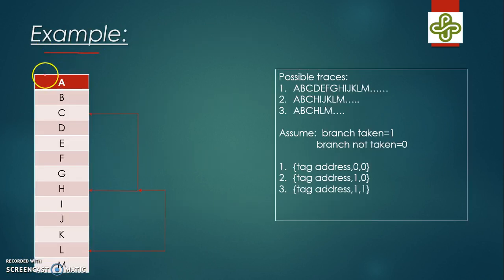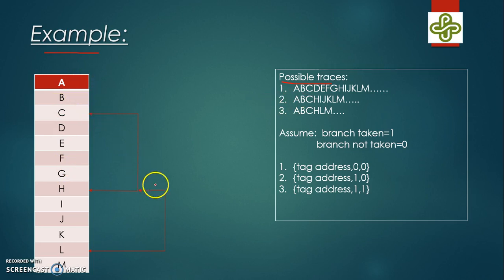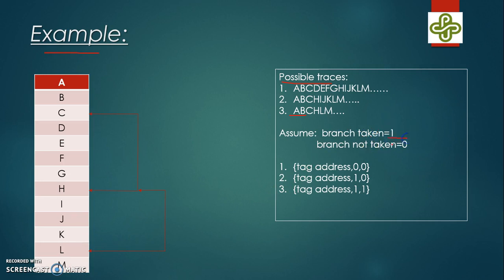Consider an example with instructions in a code having two branches — one at C and one at H. One trace is A B C D E F G H and so on. A second trace has the first branch taken and the second not taken: A B C H I J K. A third trace has both branches taken: A B C H then directly L. If a branch is taken the bit is 1, not taken the bit is 0. So the tag addresses are: tag+00 for neither branch taken, tag+10 for first taken and second not taken, and tag+11 for both branches taken.